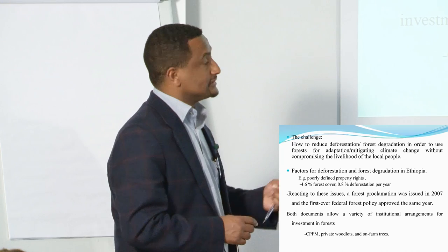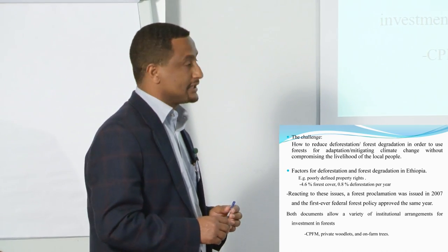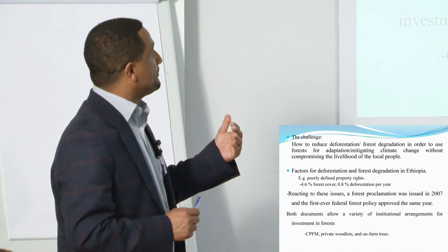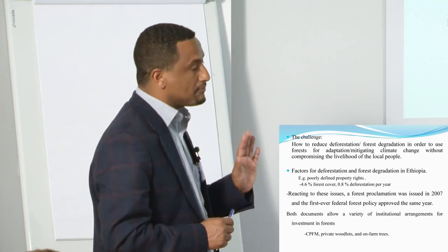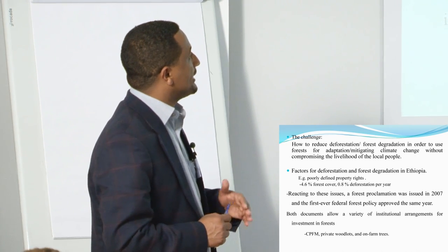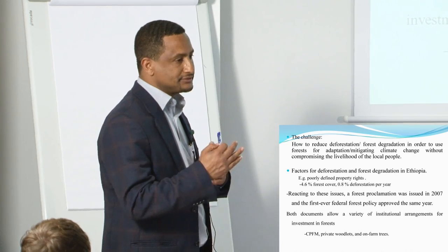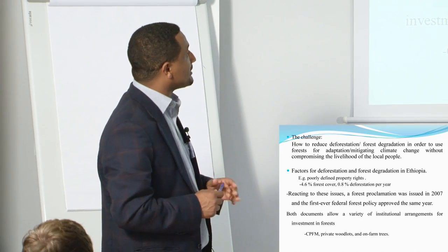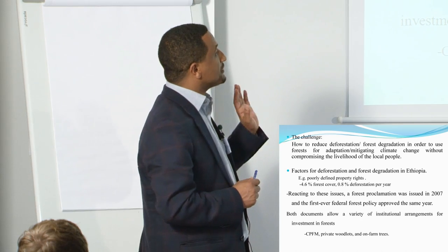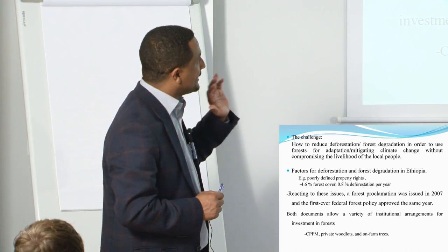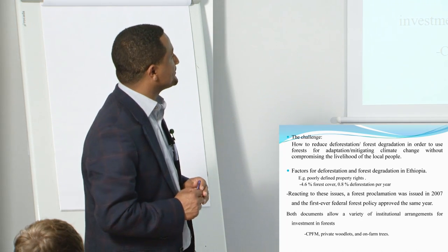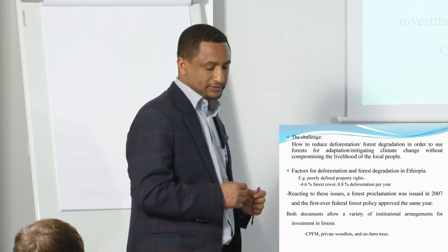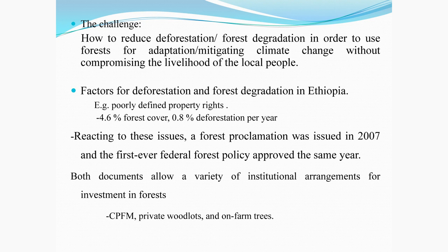There are many factors indicated as causes for deforestation or forest degradation in Ethiopia. For example, poorly defined property rights is one of the main causes. Some 4.6% of the forest cover, and 0.8% — or something like 140 to 180 hectares depending on the source — of forest are deforested each year. Recognizing this problem, the forest proclamation was issued in 2007, and the forest policy was also approved in the same year. Both documents allow a variety of institutional arrangements for investment in forests, like CPF, private, and on-farm territories.